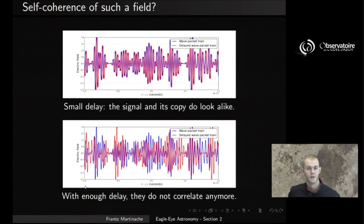On the other hand, because of the irregular shape of this signal, with a delay large enough, then you see that the two fields, and in this case I've just moved one of the fields significantly more relative to the other, you see that the two fields simply don't correlate anymore, in which case you're going to measure coherence probably close to zero.